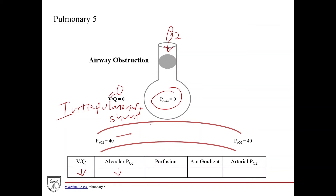Blood travels through the unventilated lobe — mixed venous blood arrives at a PO2 of about 40 mmHg, there's no oxygen to pick up, so it stays at about 40. As a result, our arterial PO2 is decreased. Now let's think about perfusion. The body physiologically figures out it is not getting ventilation in this area, and so it actually cuts off — or at least limits — the blood supply to that area.